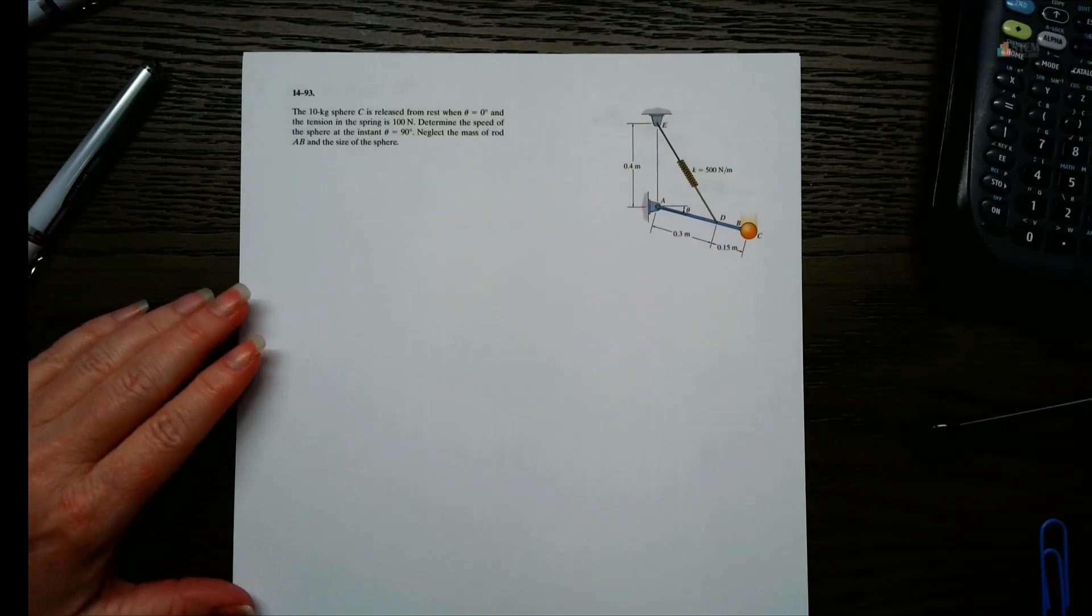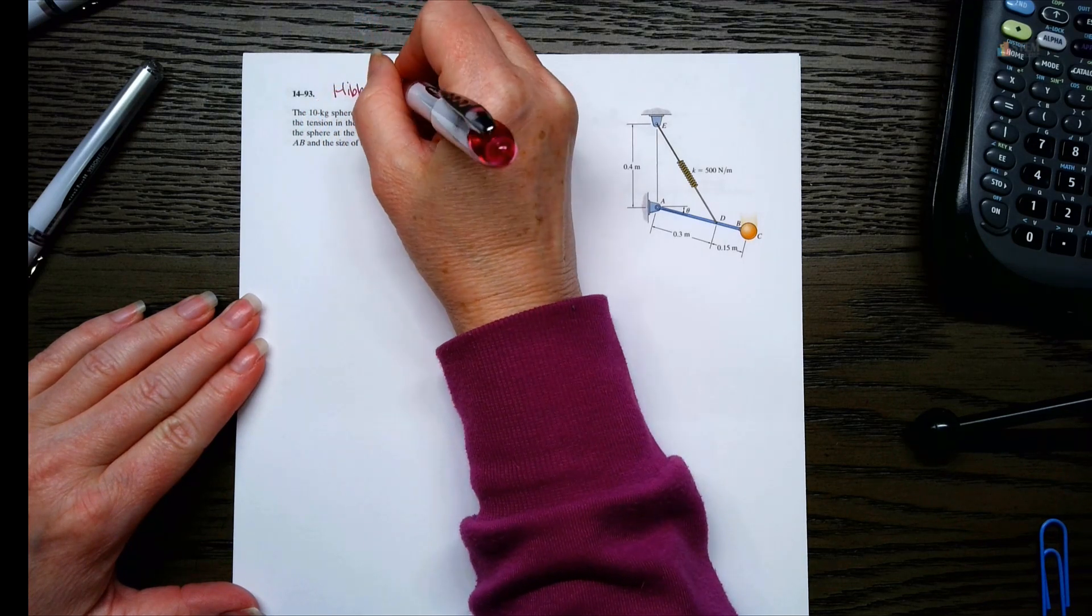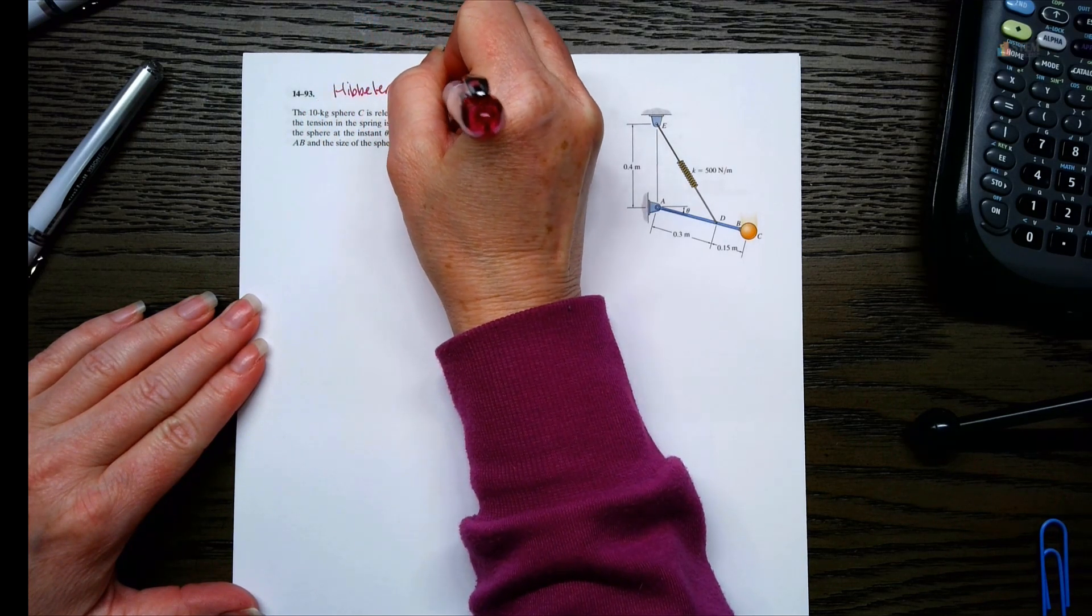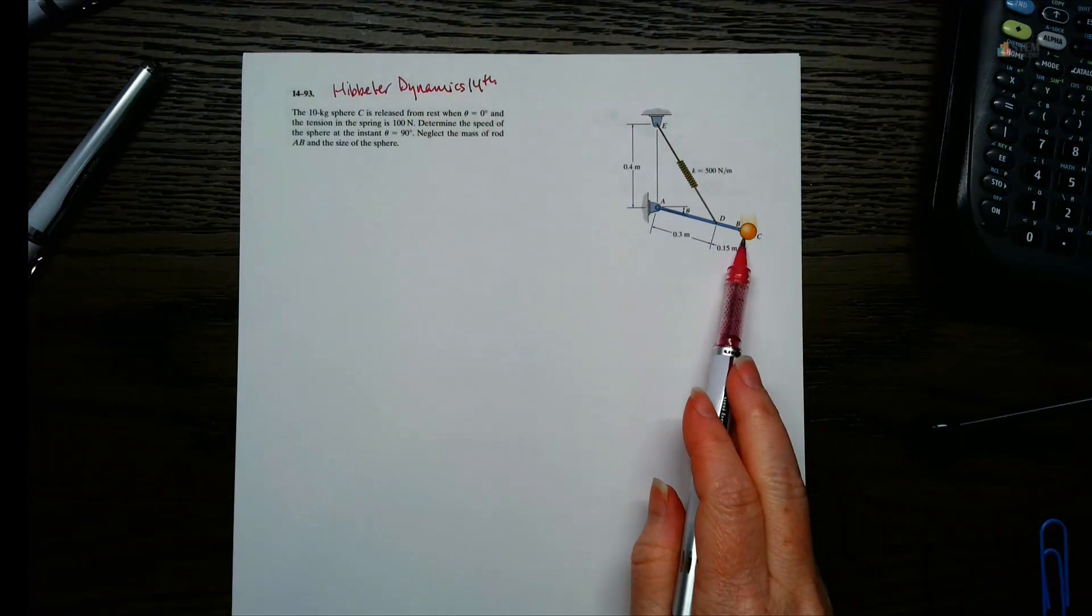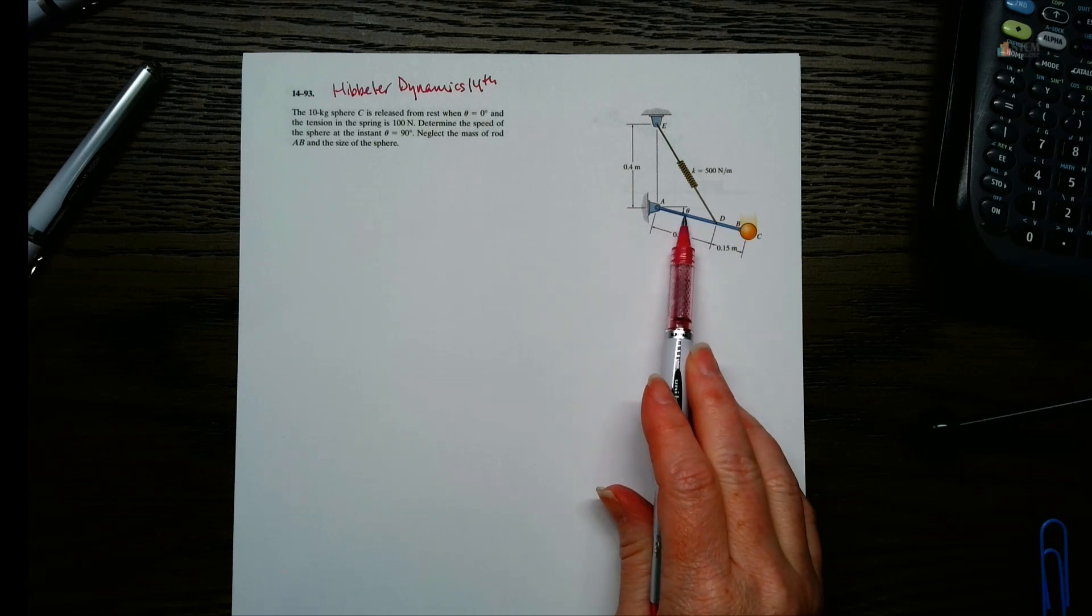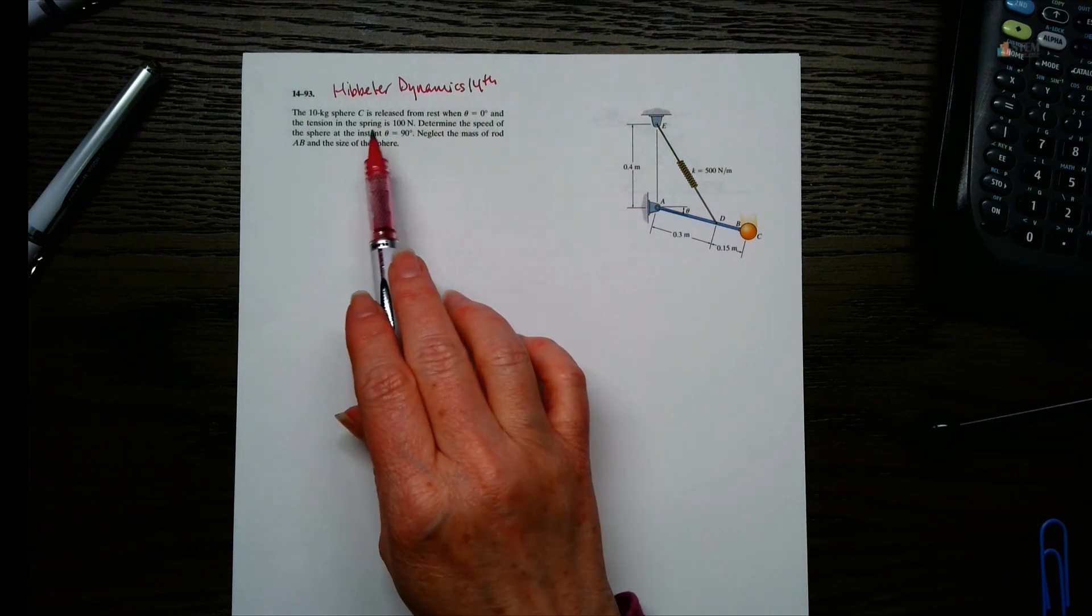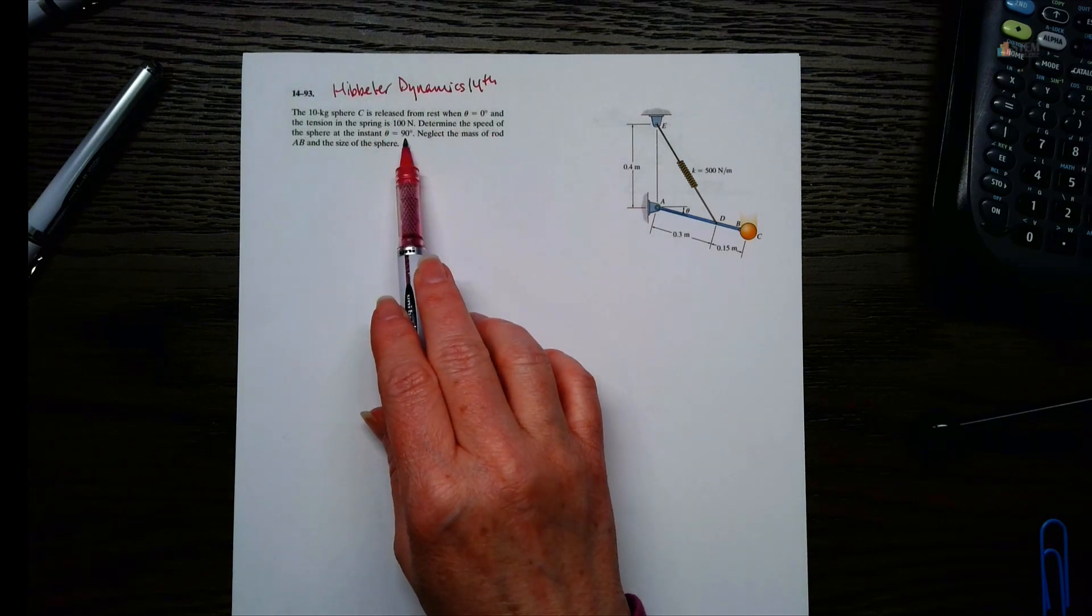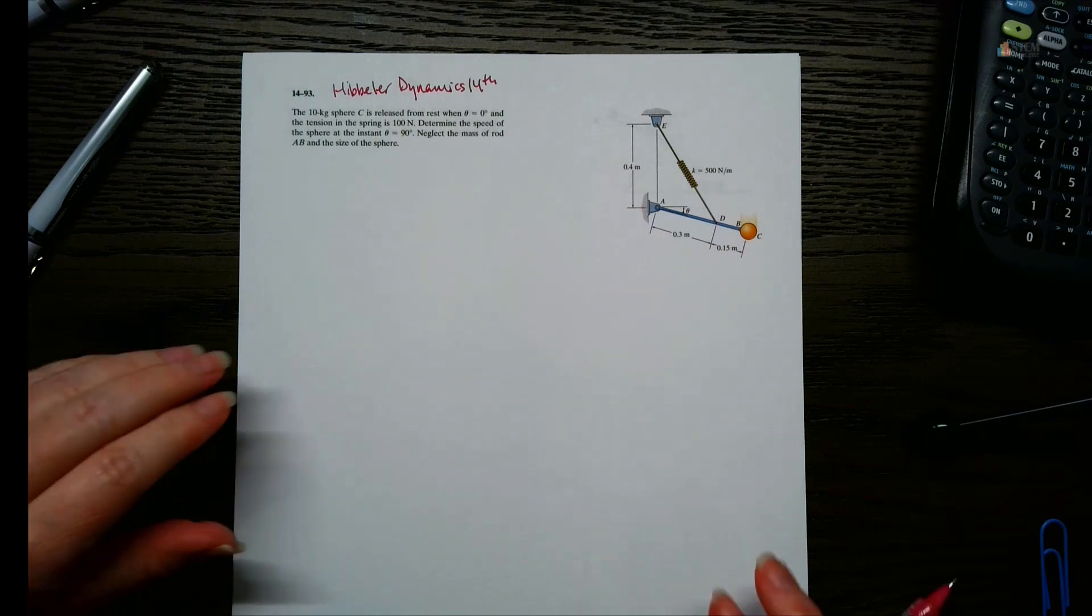Let's do a quick work energy problem from the Hibbler Dynamics book, 14th edition. We've got a 10 kilogram sphere here at C. It's going to be released from rest when theta is zero, and the tension in the spring at that point is 100 newtons. We want to find the speed of the sphere at the instant theta is 90 degrees, and we're going to neglect the mass of the rod and the size of the sphere.